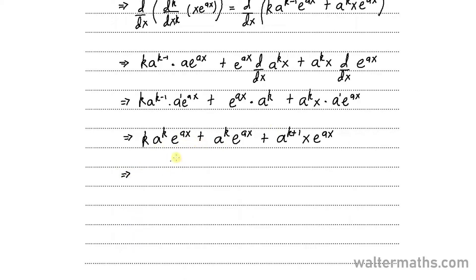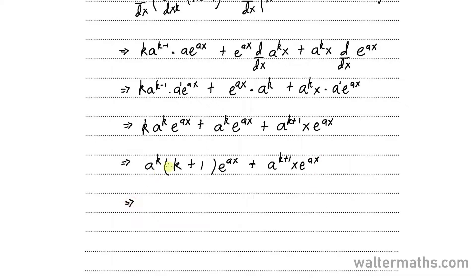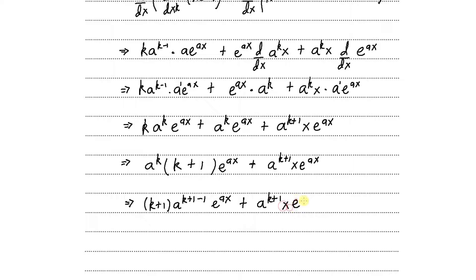For these two terms I can combine them into a single term by factoring out e to the power of ax and a to the power of k, which are common. Doing so, for those two terms I will have k plus 1 factored into the bracket. That's plus a to the k plus 1 of x of e to the ax. Rearranging: k plus 1, and for a to the power of k I write that as a to the power of k plus 1 minus 1, times e to the ax, plus a to the k plus 1 of x of e to the ax.